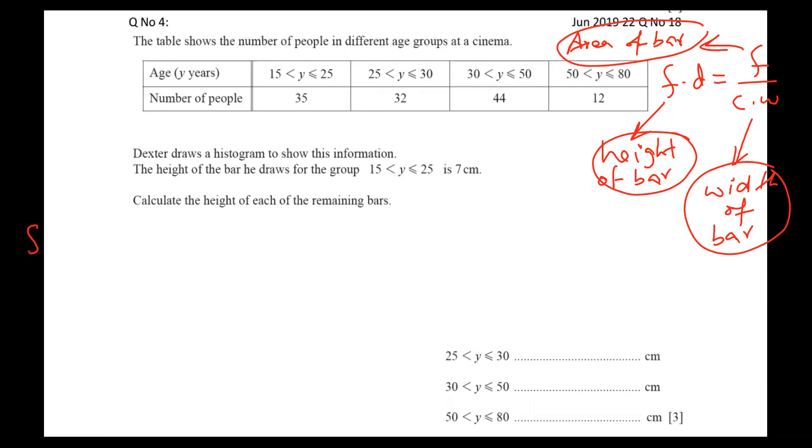Apply the formula for height number one. Frequency density equals frequency by class width. I'm talking about height number one, and frequency is 35. Class width means the gap of these two numbers: 25 minus 15 becomes 10. So our answer is coming 3.5. But you see that height one is 3.5, but he's taking 7. It means our answer is smaller, his answer is bigger. Whenever from small to big we go, we always multiply. Now multiply what number? Maybe 2, maybe 3, maybe 4, maybe 5. I don't know. So we have to check, it's called trial and error. Just try to multiply such a number to get 7.